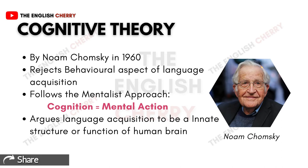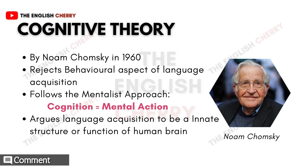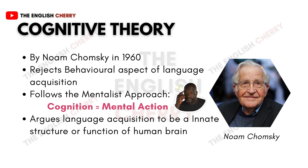Now, the cognitive theory of language acquisition by Noam Chomsky. This theory was put forward by Noam Chomsky in the 1960s. The theory rejects or somehow neglects the social or behavioral aspect of language acquisition and focuses on the human mind and its natural capacity to learn and acquire language. It follows the mentalist approach based upon cognition, relating to the mental action or process of acquiring knowledge through the mind and thought process. It argues language acquisition to be an innate structure or function of the human brain — an inborn ability to naturally acquire language. For example, when children are exposed to speech, words, sounds, phrases, or grammatical rules, this structuring of language automatically begins to operate.